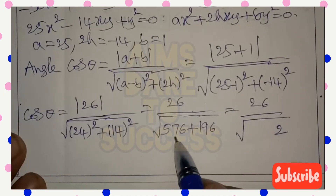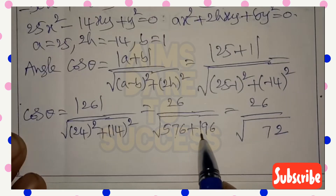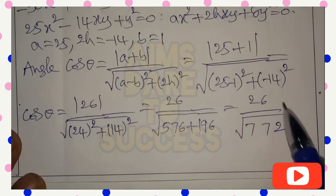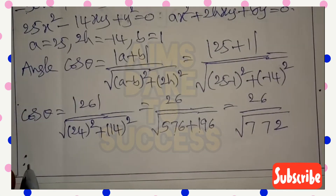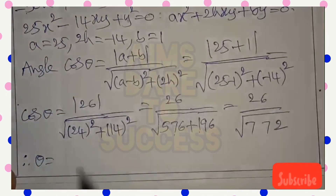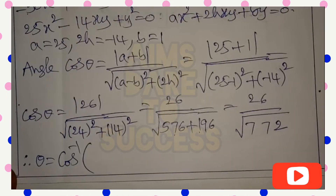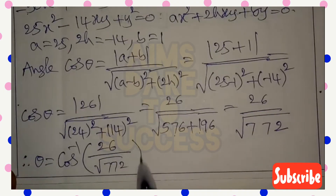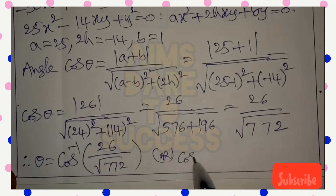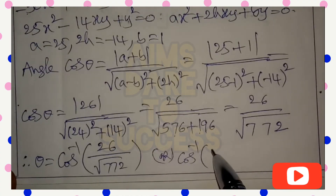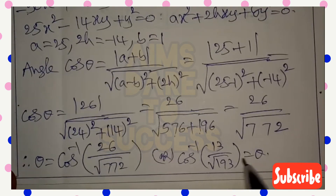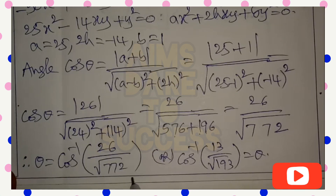Computing: 576 + 196 = 772. So cos θ = 26 / √772. Therefore θ = cos⁻¹(26 / √772). Simplifying, this can also be written as cos⁻¹(13 / √193). I hope you understand, my dear students. Please subscribe to our channel and share with your friends.